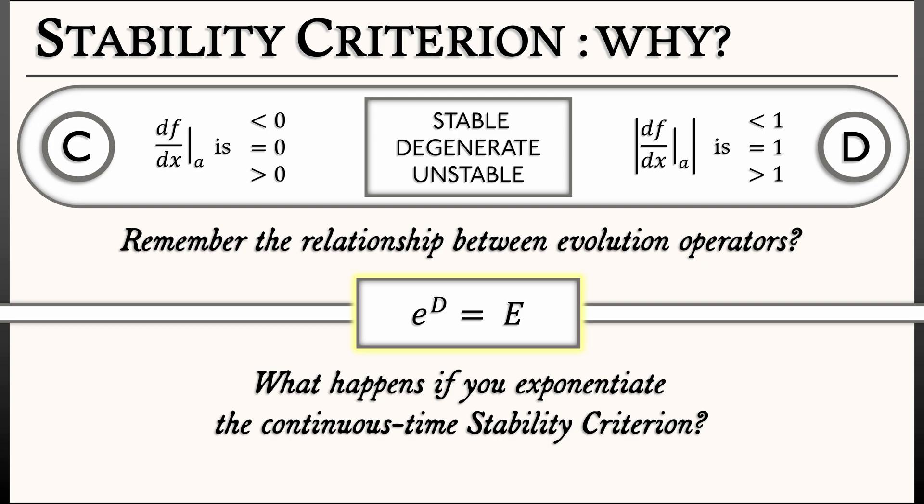What happens if you exponentiate a positive number? You get something that's bigger than 1. And, of course, the exponential of 0 is precisely 1.